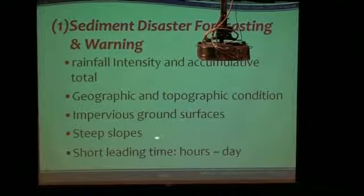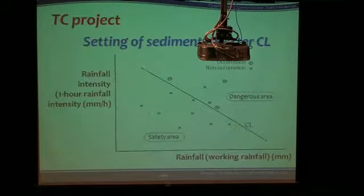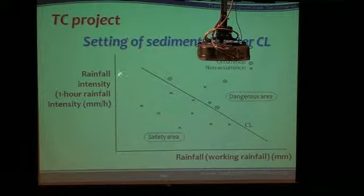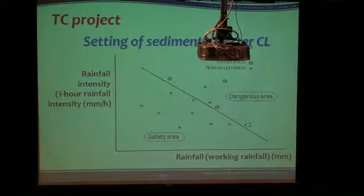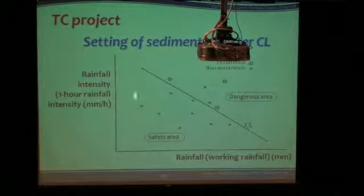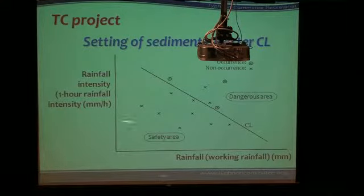The central mountain range is made up of very steep slopes with short lead times. Here's an example from the typhoon committee — a diagram they call sediment disaster. If you look at rainfall intensity versus accumulated rainfall: so long as the amount of accumulated rainfall before isn't too bad, you can withstand very heavy rainfall. But if you've already accumulated a lot of rainfall, even an intensity which is not so great can lead to a landslide disaster.